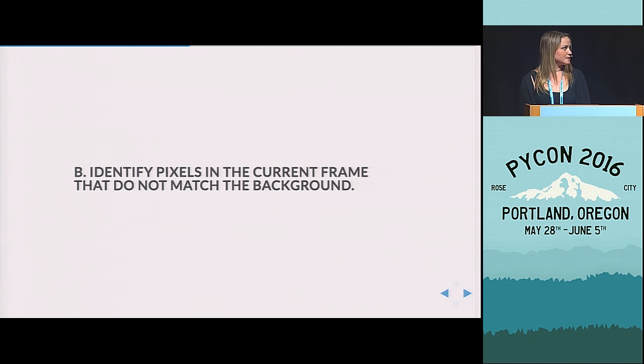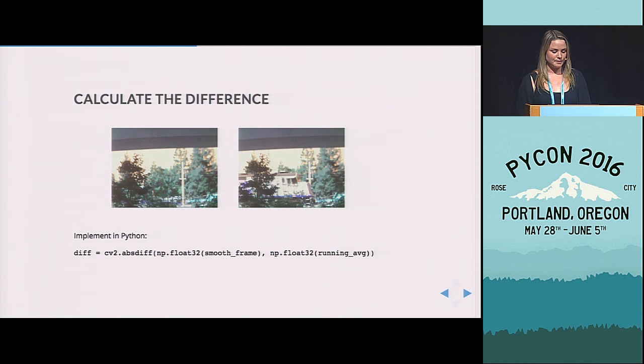So now we want to, for every new frame, identify whether there's some motion in that frame or if there's anything new in that figure compared to the background. So if we take for an example these two figures, we want to take their difference and then see where they're different. And so we can do this with the absdiff function.